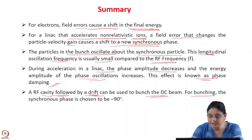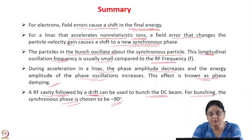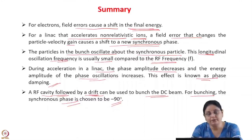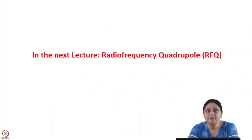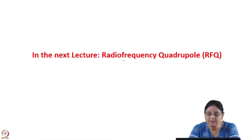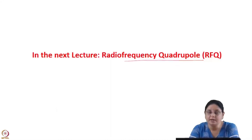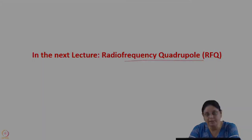During acceleration in a linac, the phase amplitude decreases and the energy amplitude of phase oscillations increases — this is known as phase damping, and holds when the rate of acceleration is small. An RF cavity followed by a drift tube can be used to bunch a DC beam; the synchronous phase is chosen to be -90°, giving maximum separatrix width of 360° to capture the maximum amount of DC beam. With this, we complete the longitudinal dynamics of particles. In the next lecture, we will study the radio frequency quadrupole, a type of linear accelerator used for accelerating low energy particles.